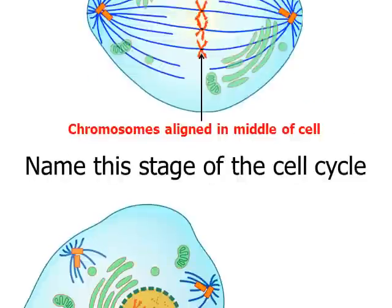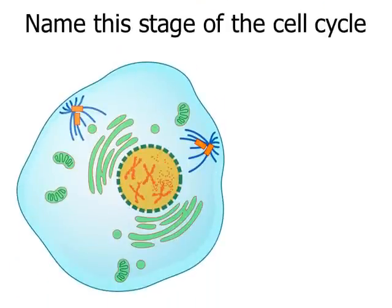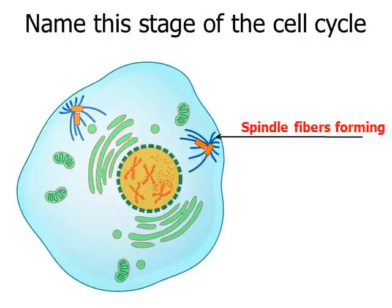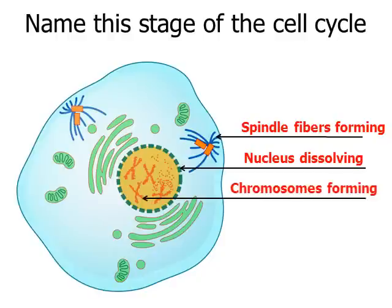Here's another one. Is this a picture of interphase, prophase, metaphase, anaphase, or telophase? Pause the video. There are a couple of clues: clue number one, you can see the blue spindle fibers are forming. Clue number two, you can see that the nucleus is starting to break apart — there are holes in it, it's dissolving. Clue number three, you can see the X-shaped chromosomes are beginning to form. Those three clues tell you this is a picture characteristic of prophase.